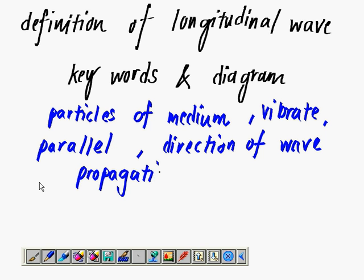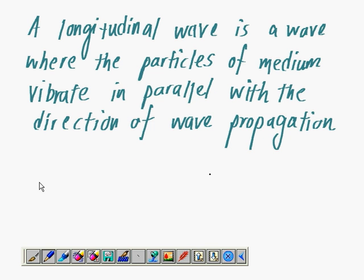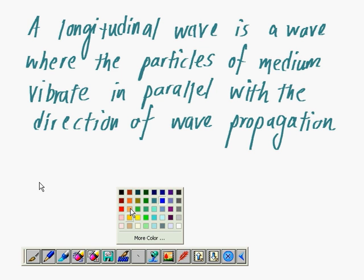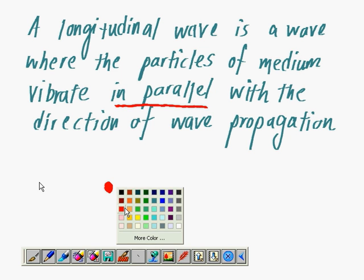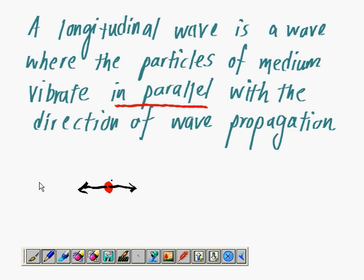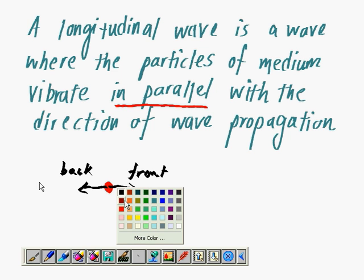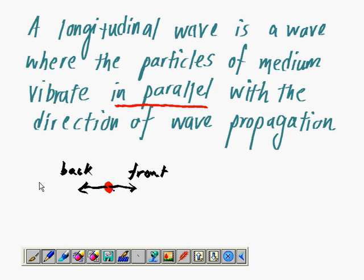Now the example of longitudinal wave is sound wave. A longitudinal wave is a wave where the particles of medium vibrate in parallel with the direction of wave propagation. If I draw a diagram, it will move forward and backward, move to the front and move to the back, and this movement is in parallel with the direction of the wave propagation.